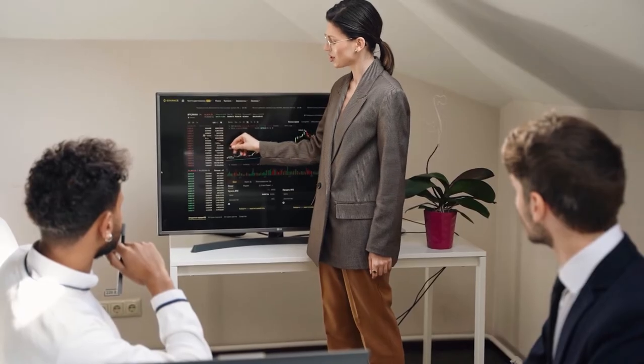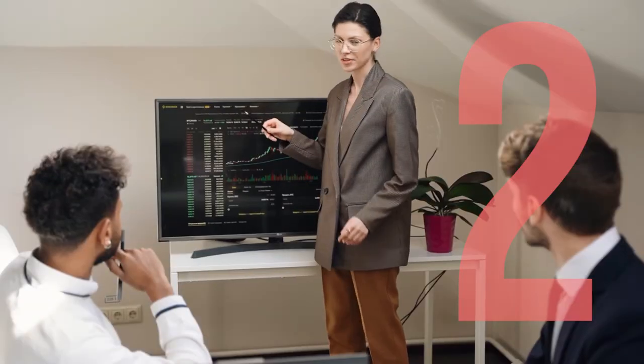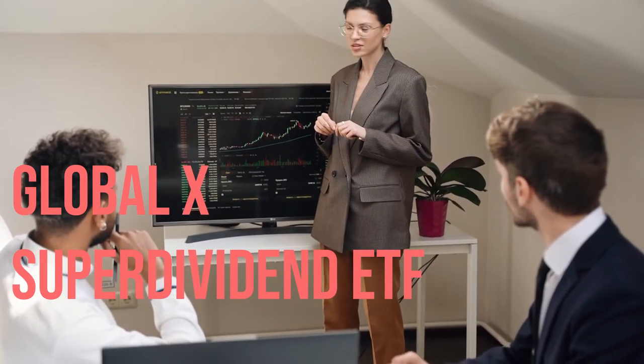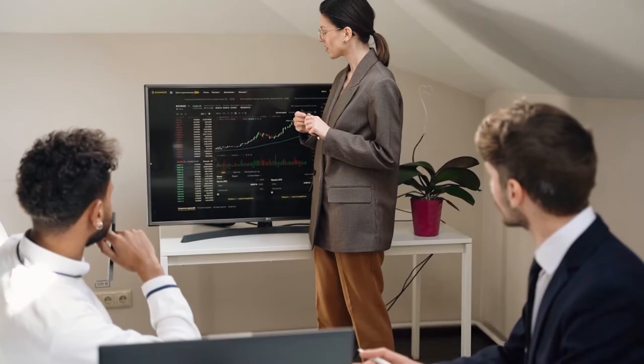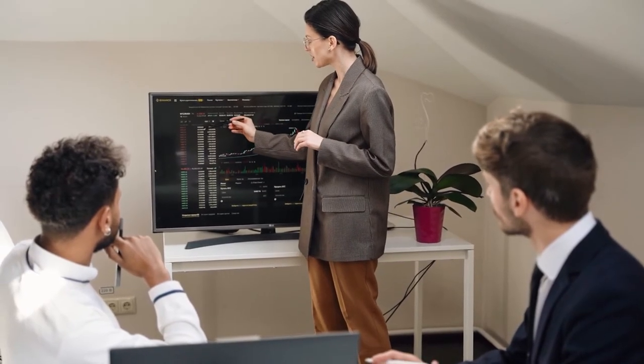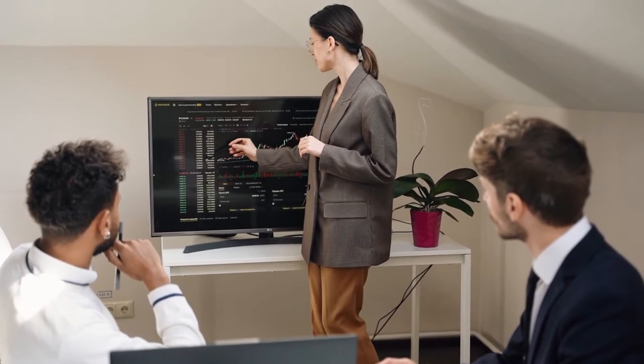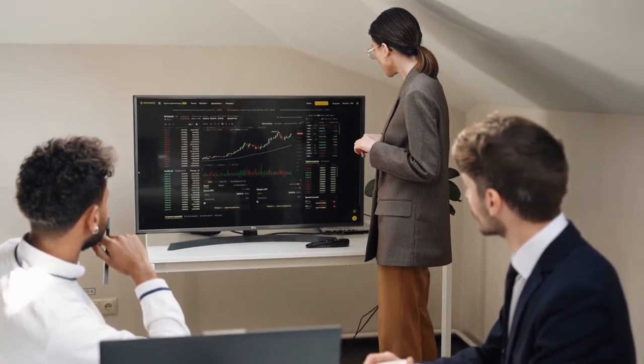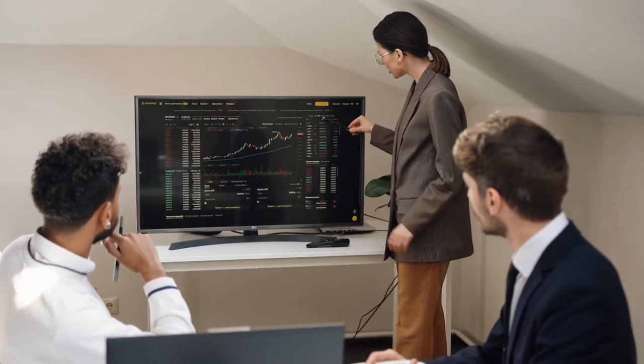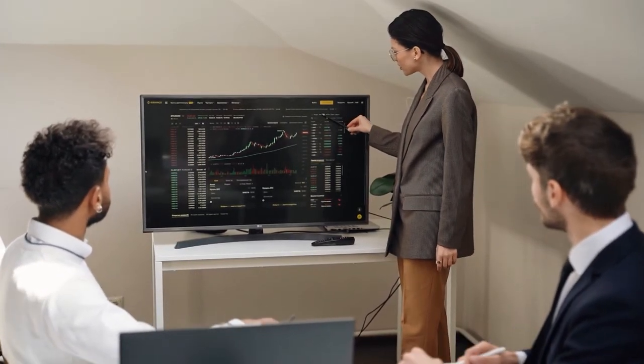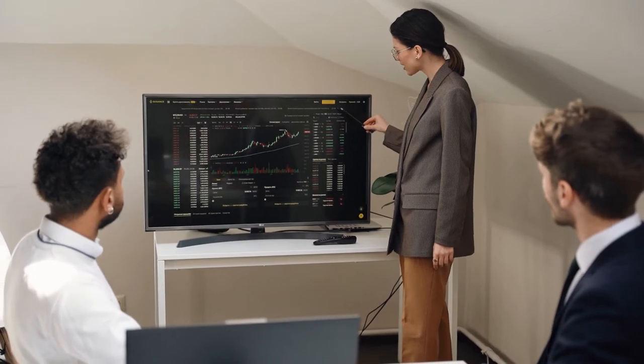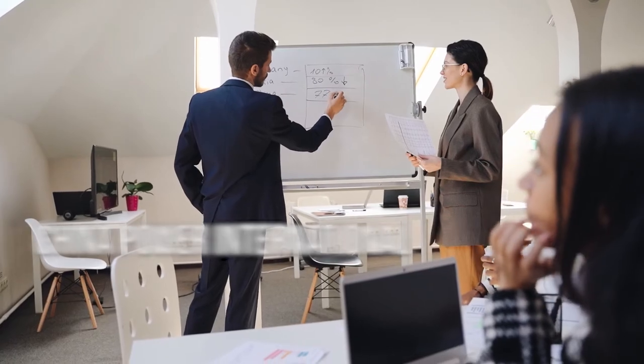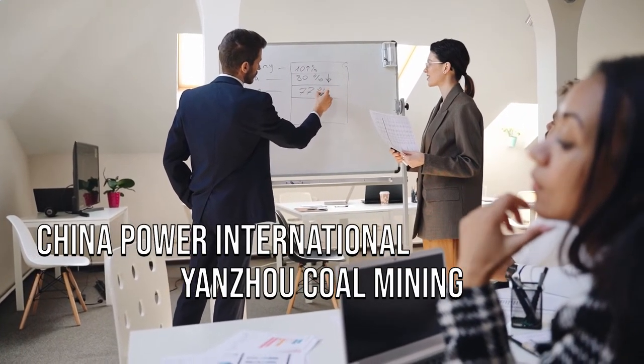Coming in at number two is SDIV, or the Global X Super Dividend ETF. You might recognize this ETF because the last one was DIV and this one is SDIV—this is a very similar ETF with a slight twist from the same company. Instead of investing in 50 of the highest dividend-yielding stocks in the United States, this ETF invests in 100 of the highest dividend-yielding stocks in the world. The ETF currently holds 104 stocks, with the top holdings being China Power International, Yanzhou Coal Mining, and a few other names that you're unlikely to recognize.